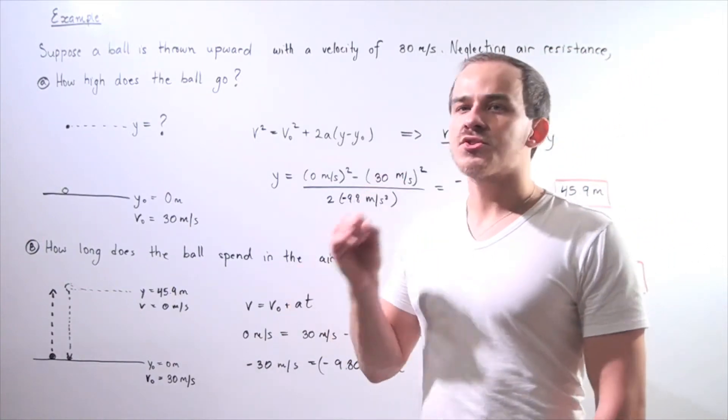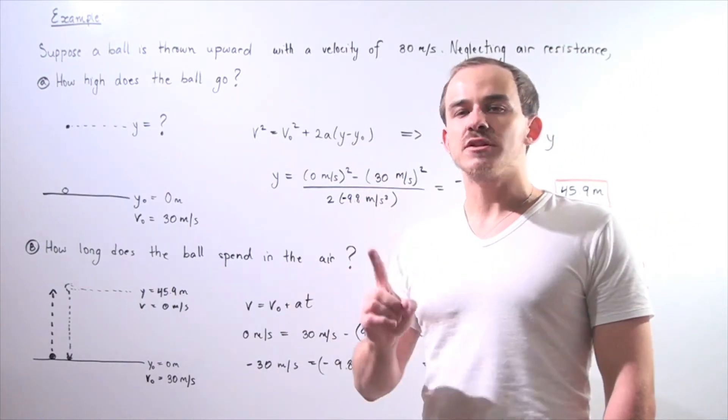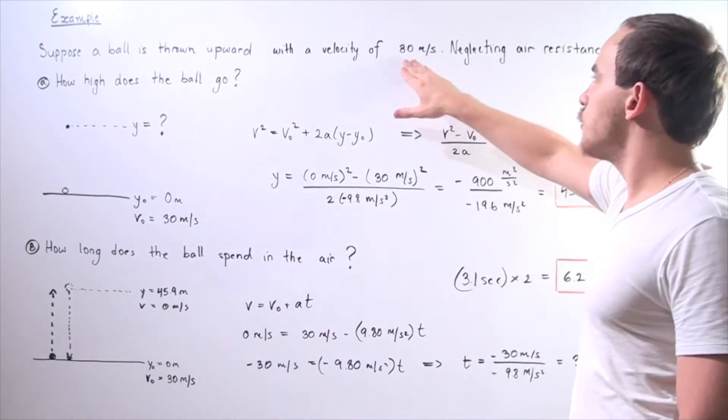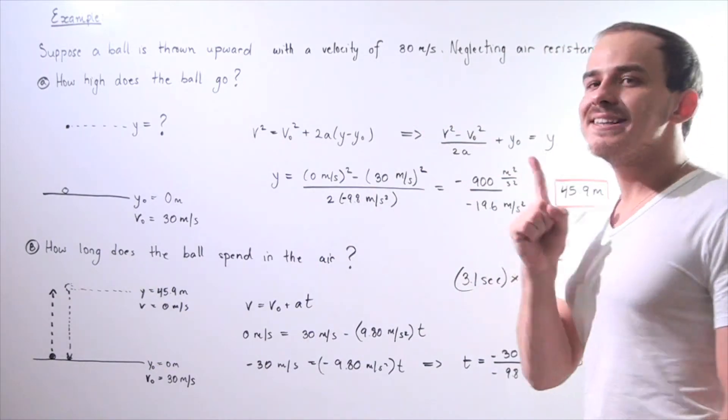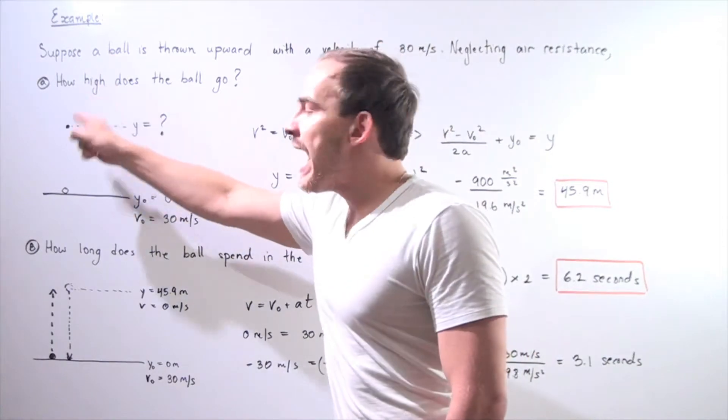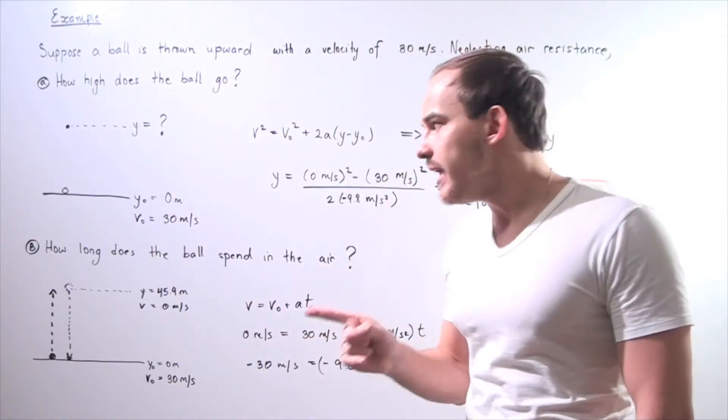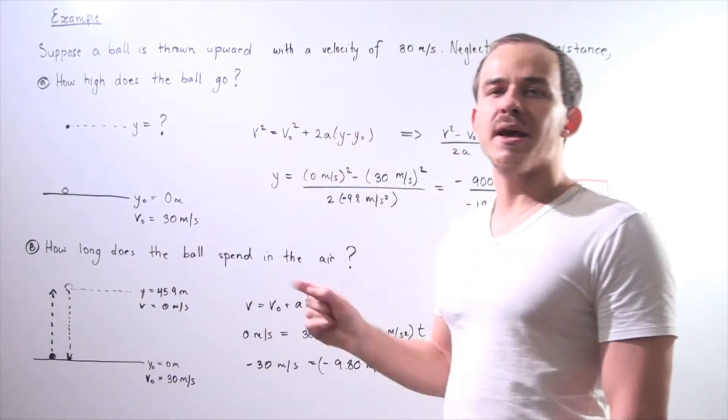Suppose a ball is thrown upward with an initial velocity of 30 meters per second. Neglecting air resistance, let's find A, how high does the ball go, and B, how long does the ball spend in the air.